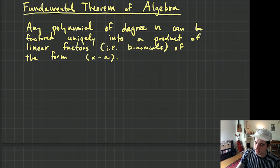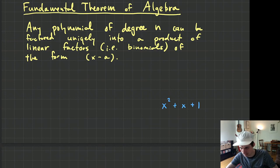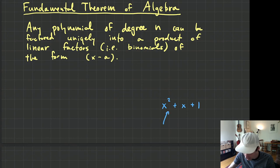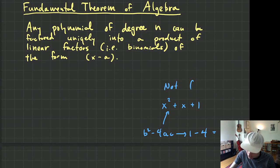You might say, hold on — there is this polynomial x² + x + 1. You can't factor that. I can plug it into the discriminant: b² − 4ac = 1 − 4(1)(1) = −3. So it has a negative discriminant — not factorable.